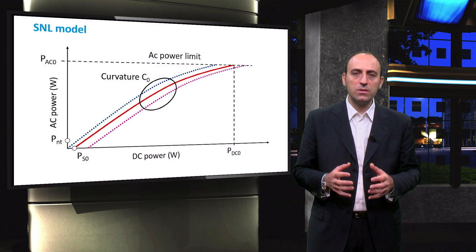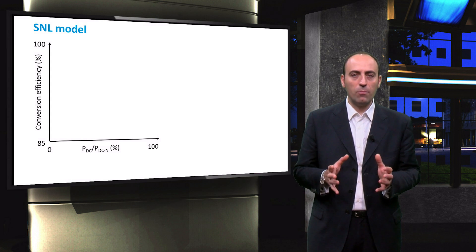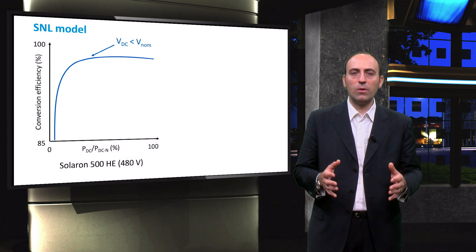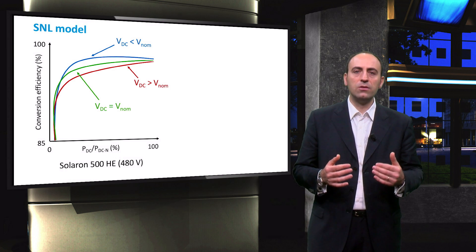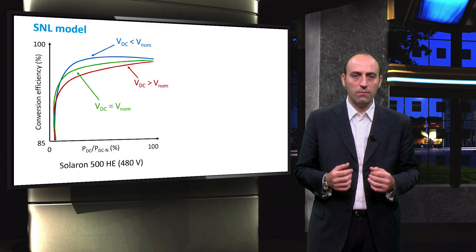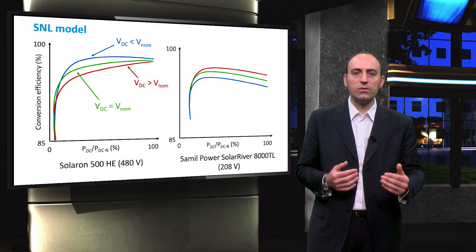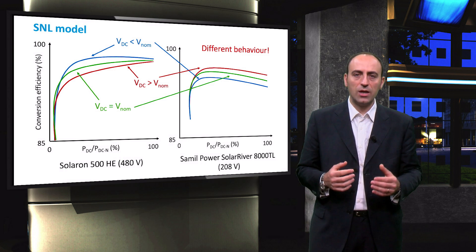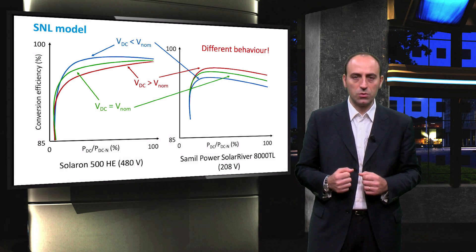The dependency of the inverter efficiency on the DC input voltage is a very complex phenomenon. For a given inverter, there is a different behavior when the DC voltage is lower, equal, or higher than the nominal voltage of the inverter. Nevertheless, for a different type of inverter, a higher voltage can lead to higher efficiencies, or vice versa. The differences between the different inverter types can be partially explained by the different types of switches used.